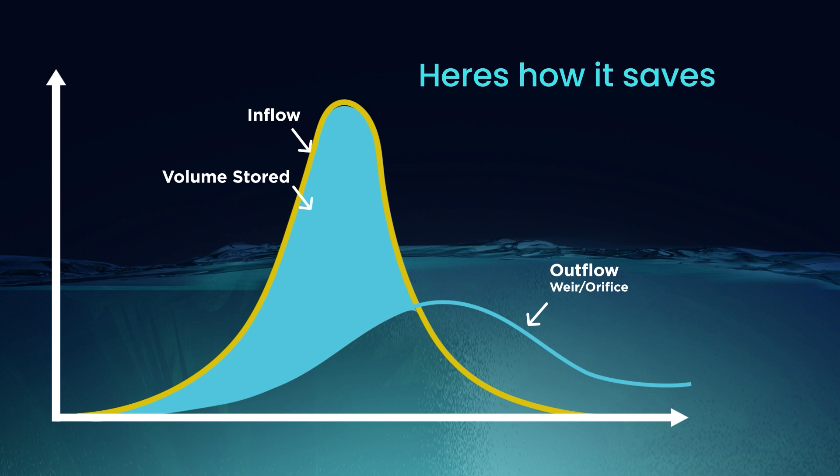When traditional weirs and orifices are used to control flow, the peak rate of discharge is only achieved for the instant in time when the volume is completely full. That's when there is the most head over the weir or orifice.